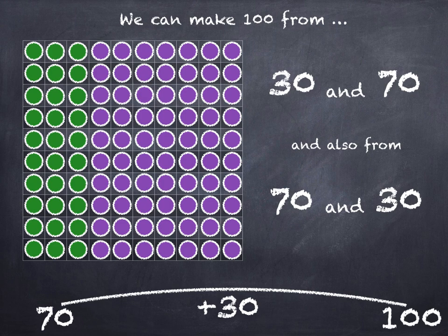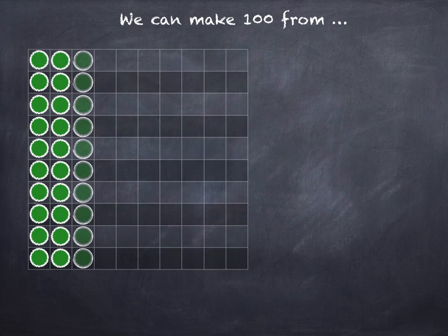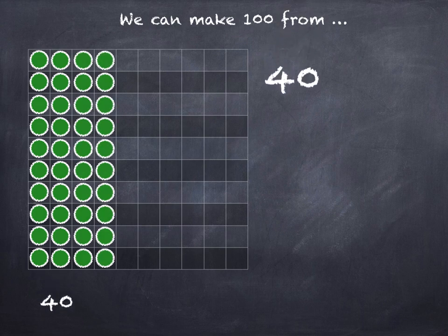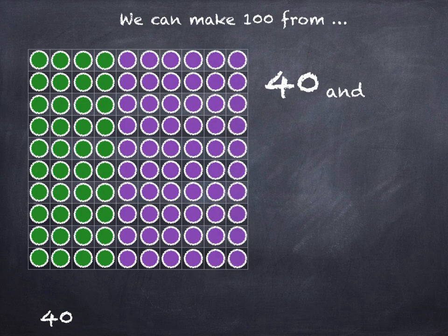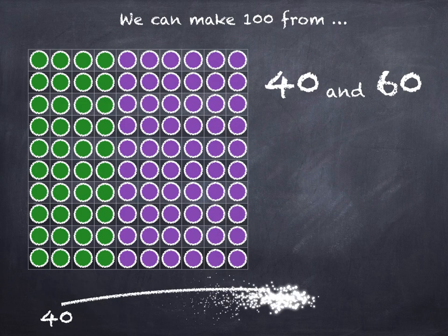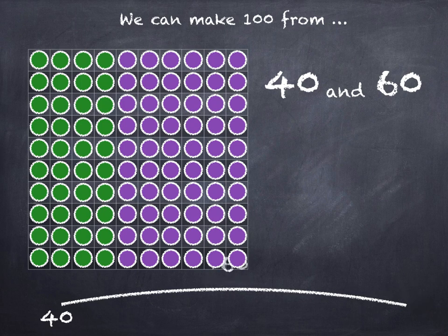We can make 100 from 40 and 60. 40 plus 60 is 100.